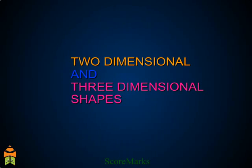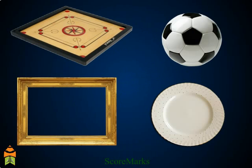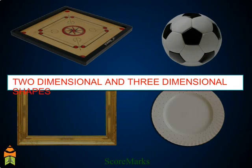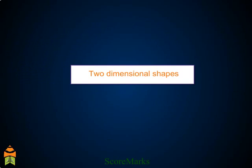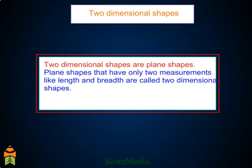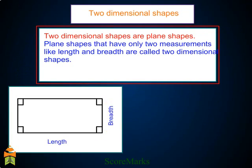Two-dimensional and three-dimensional shapes. We see many objects of different shapes in our daily life. Here we study about two-dimensional and three-dimensional shapes. Two-dimensional shapes are plane shapes. These types of shapes have two measurements like length and breadth. Therefore, they are called two-dimensional shapes.